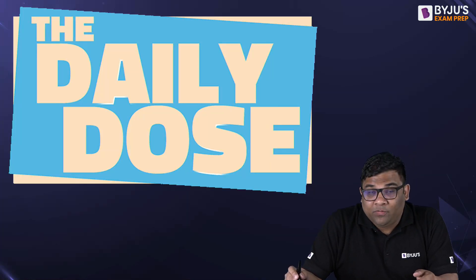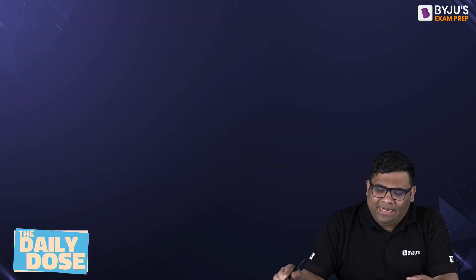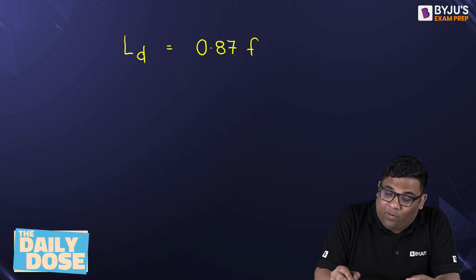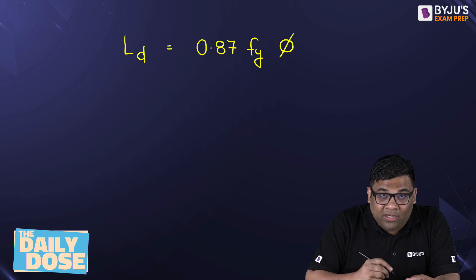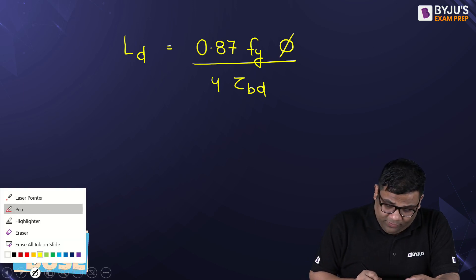Welcome to this Daily Dose video on development length. Development length formula we know. What is that? Development length Ld is equal to the stress in steel that is 0.87 Fy into phi which is the diameter of the bar divided by 4 tau Bd. This is the equation.